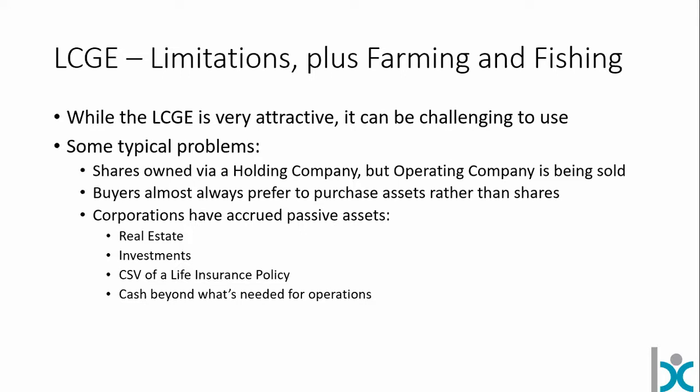A corporation can also become a victim of its own success by accumulating passive assets — whether real estate (which in most circumstances is passive), investments, cash surrender value of a life insurance policy (which will always be passive), or cash beyond what's needed for operations. The reality is that the lifetime capital gains exemption is not going to be terribly easy to use, and businesses often put themselves offside for it just by virtue of how they grow.